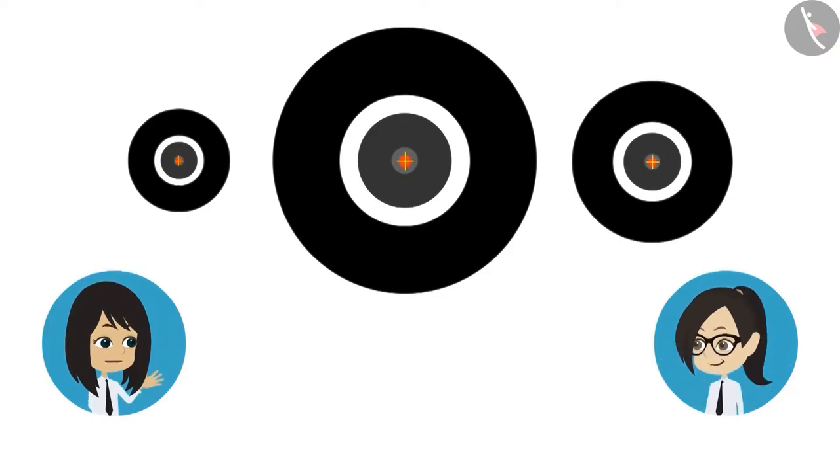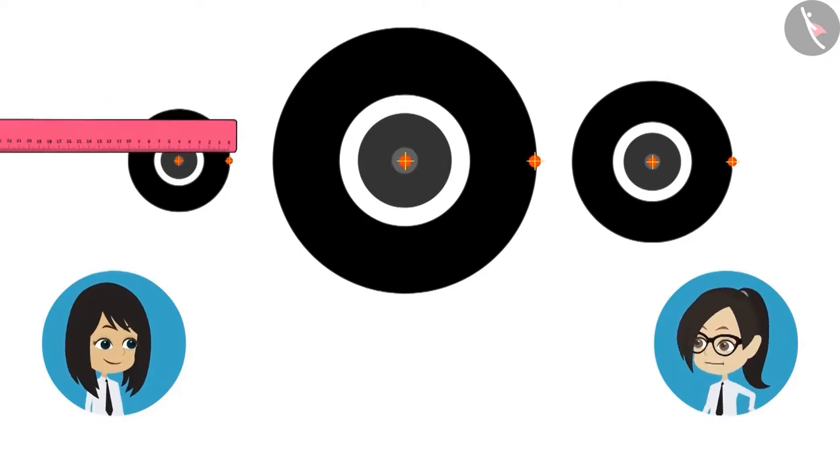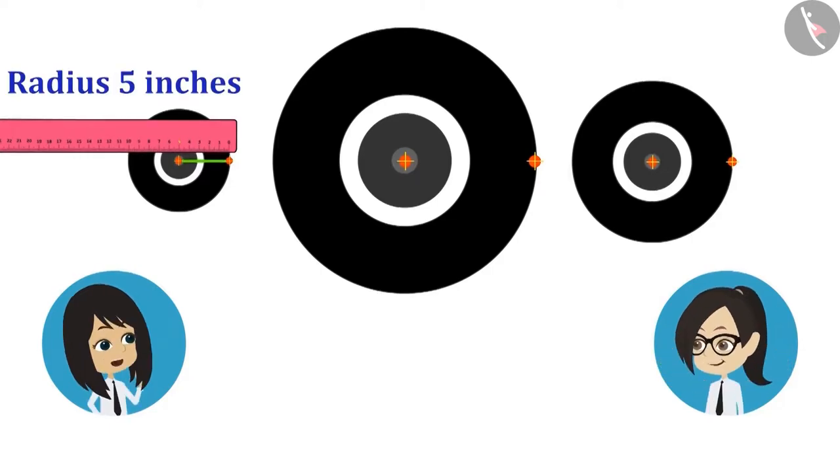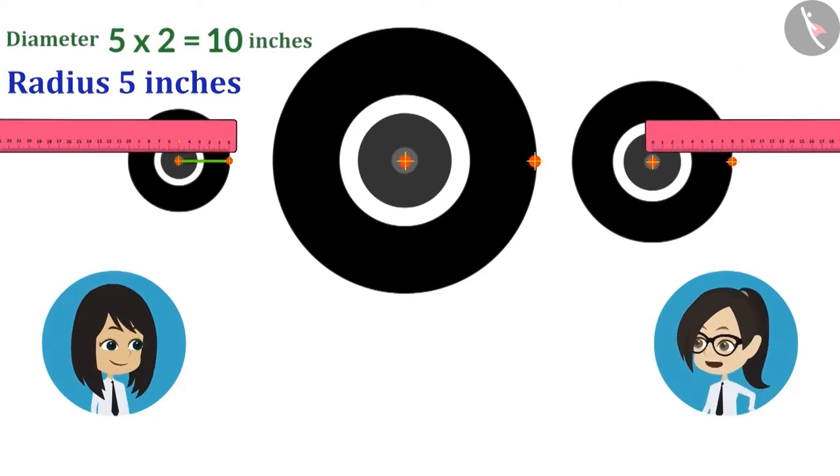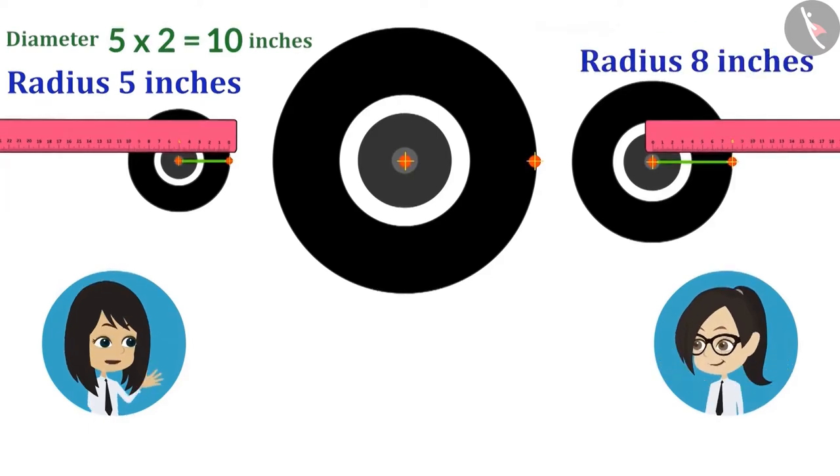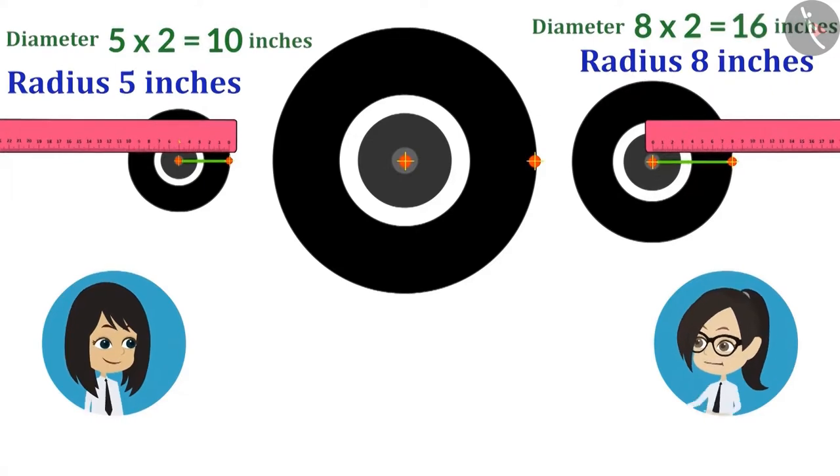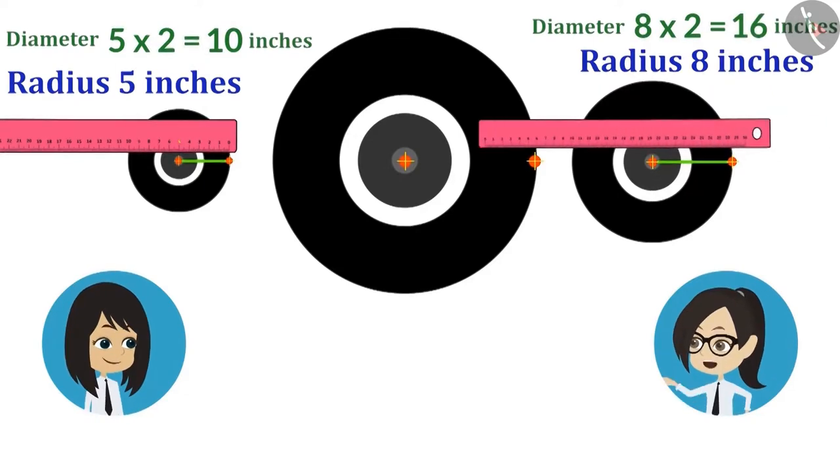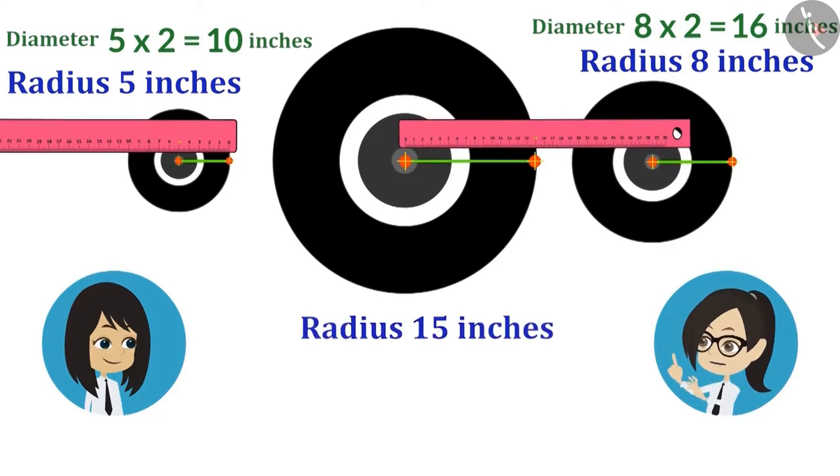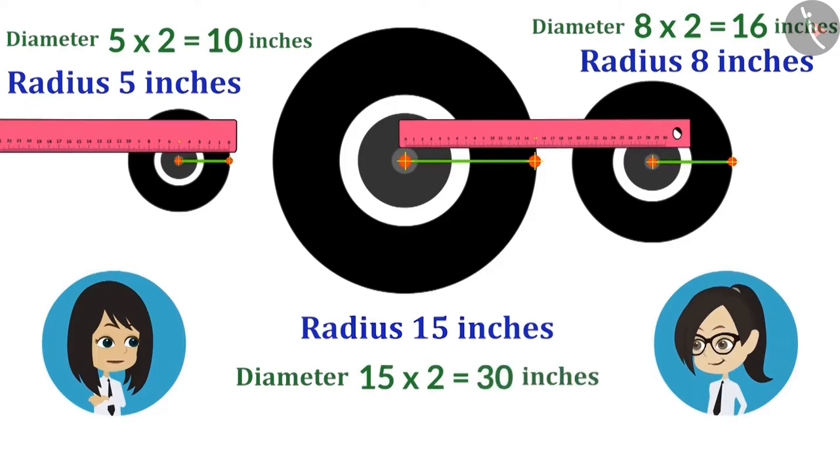Now measure the distance from the center to the point on the boundary. Now look. The radius of the wheel of the scooter is 5 inches. This means its diameter will be 5 inches multiplied by 2 meaning 10 inches. Now look. The radius of the front wheel of the tractor is 8 inches. This means its diameter is 16 inches. And now it's the turn of the largest wheel of the tractor. Its radius is 15 inches. This means its diameter is 30 inches.